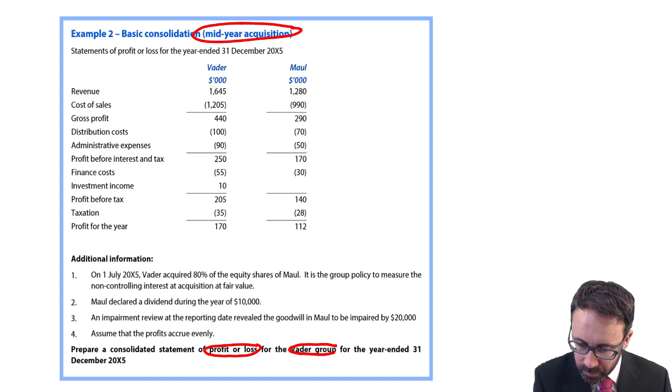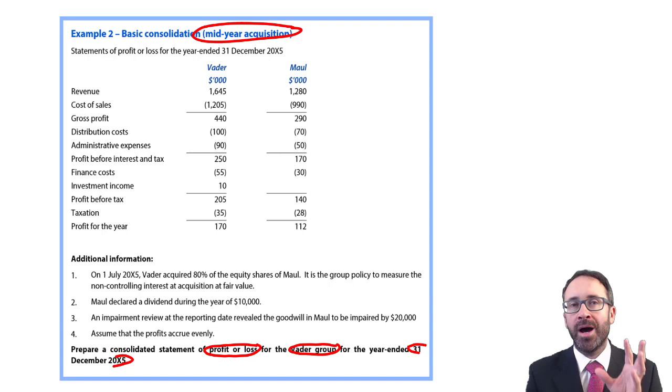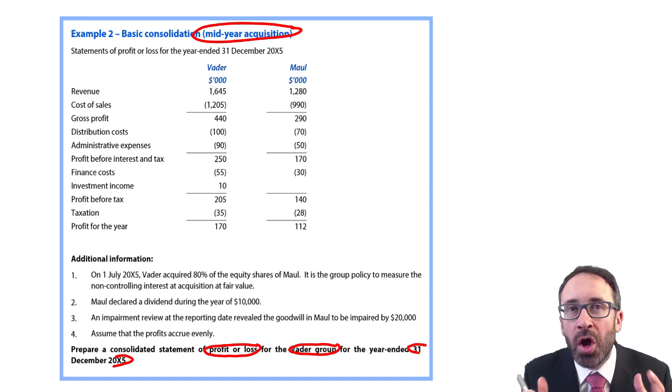We're told that it is for the VEDA group, so therefore VEDA must be the parent. And our reporting date is the year ended 31st of December 20X5. That's vitally important that you identify the reporting date so that you can then identify if there is a mid-year acquisition within the question.